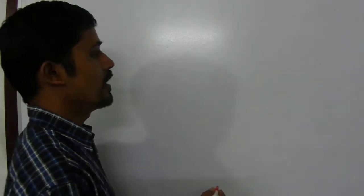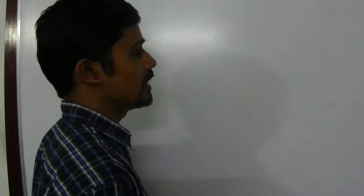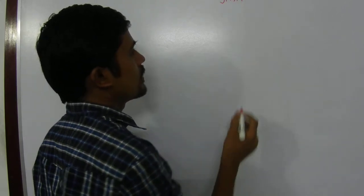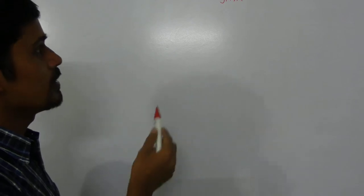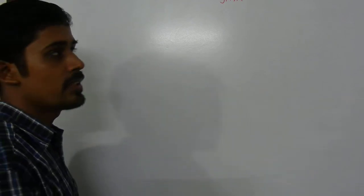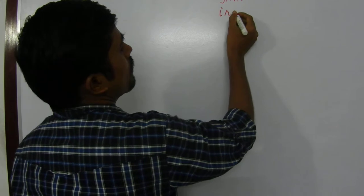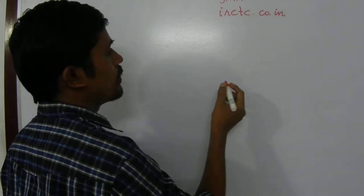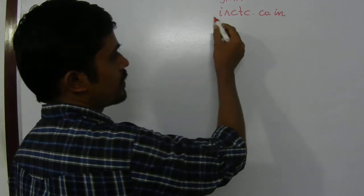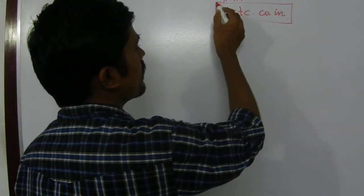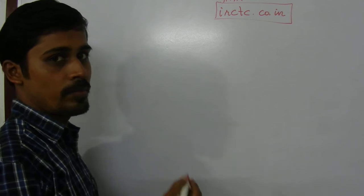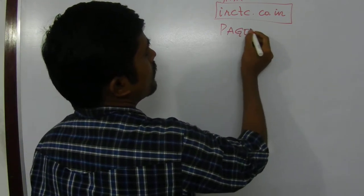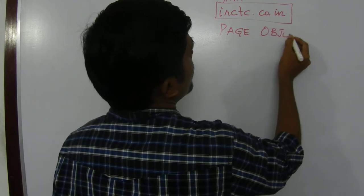Good evening friends. We have already seen the basis of object-oriented programming through Java. Now we are going to discuss about how we can make use of Java for a real project, which is testing ircpc.co.n. I am going to explain the project framework for ircpc.co.n. This is the website we have taken for our project, and the approach we are going to have is page object model.